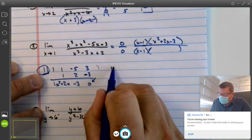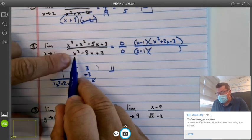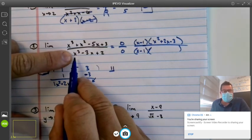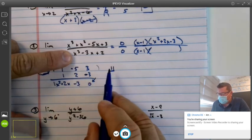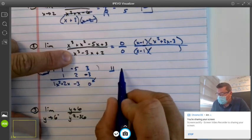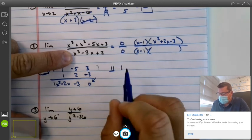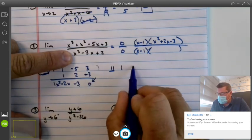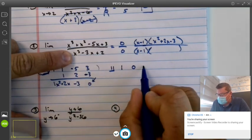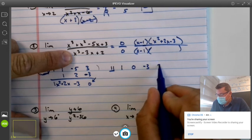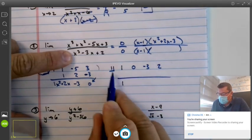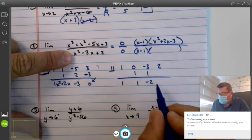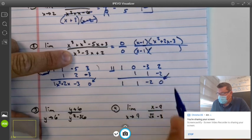Again, use synthetic division on that. We know that 1 is a root, or x-intercept, or a solution. So we put 1 in the batter's box and write down all of the coefficients. 1x to the 3rd. In the absence of an x squared term, don't forget your placeholder. 0x squareds, negative 3x's, and 2. Bring it down. Multiply, add, multiply, add, multiply, add. Excellent.